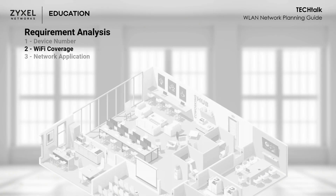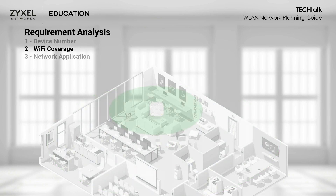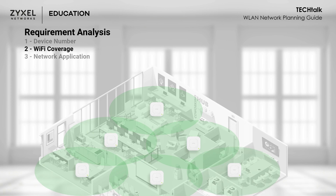Next, let's talk about the coverage and size of the venue. You may expect a single AP to cover all areas, but each AP has a limited signal range. Therefore, it's crucial to ensure you have enough access points to effectively cover your required areas without any dead spots or areas with weak signal.